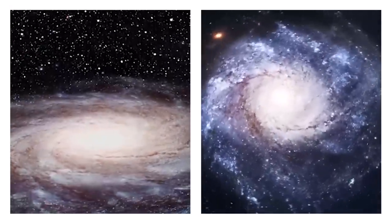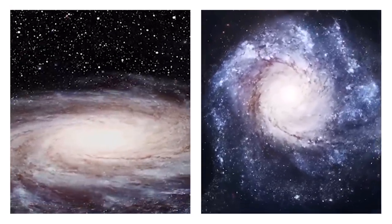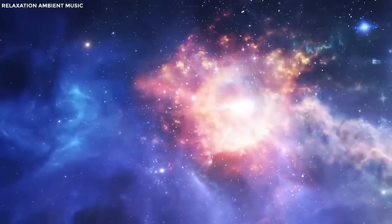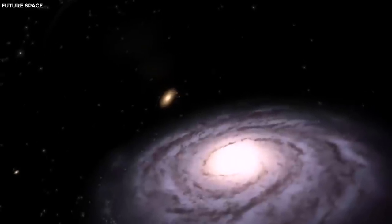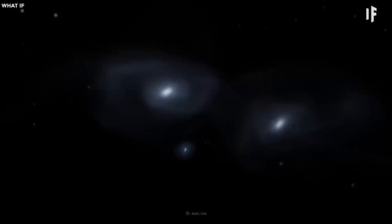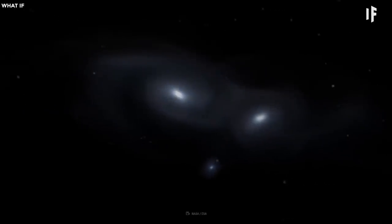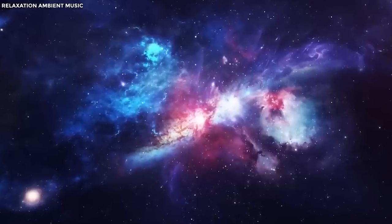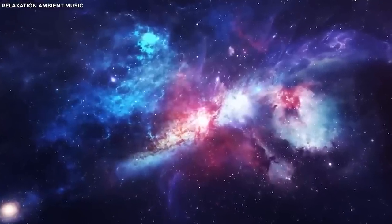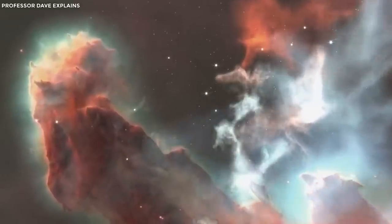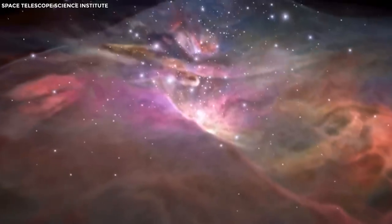When Andromeda and the Milky Way galaxies ultimately collide and merge, an interesting outcome is the influx of dust from both galaxies. This may sound unimportant, but this dust plays a crucial role in creating new stars. Think of it as the raw material for star formation. As the galaxies come together, the mixing of their dust creates areas that are perfect for forming new stars. These regions are like stellar nurseries where the dust and gas collapse due to gravity, giving birth to new stars.